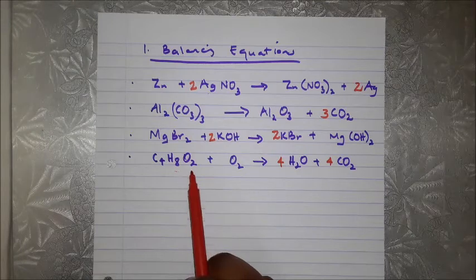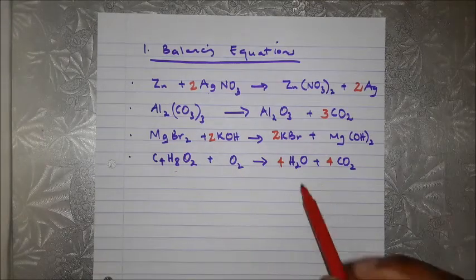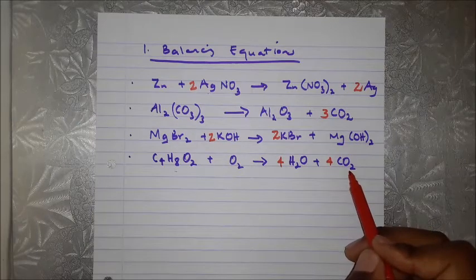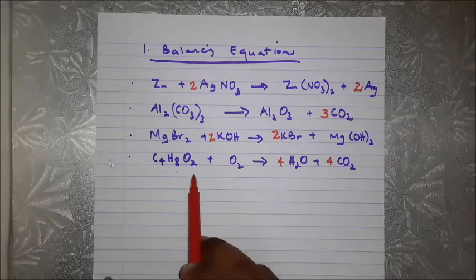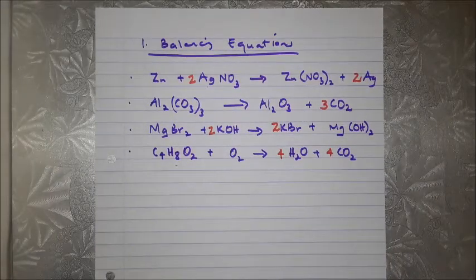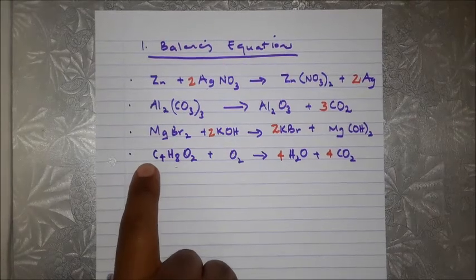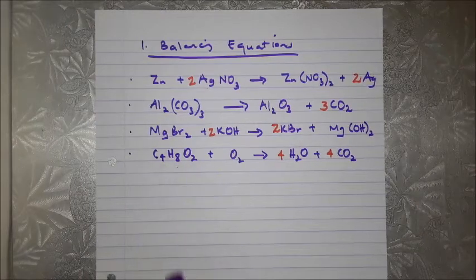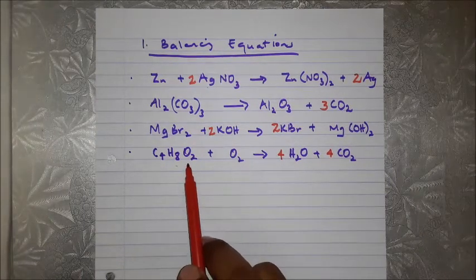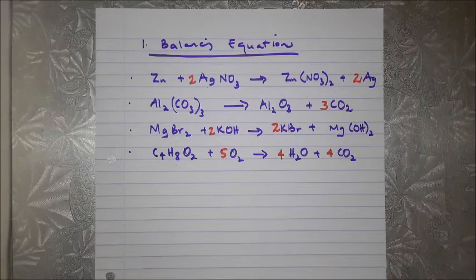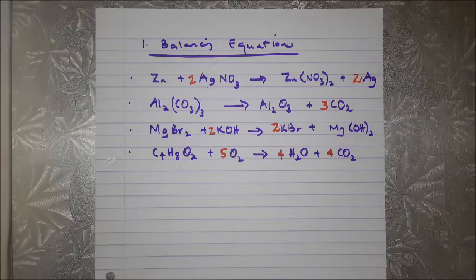Now for oxygen: on the reactant side we have 2 from C₄H₈O₂. On the product side we have 4 (from 4×H₂O) plus 4×2=8 (from 4×CO₂), totalling 12 oxygens needed. We already have 2 from C₄H₈O₂, so we need 10 more — meaning we put a 5 in front of O₂ (5×2=10). Don't be afraid to use coefficients like 4 or 5 to balance equations like this.